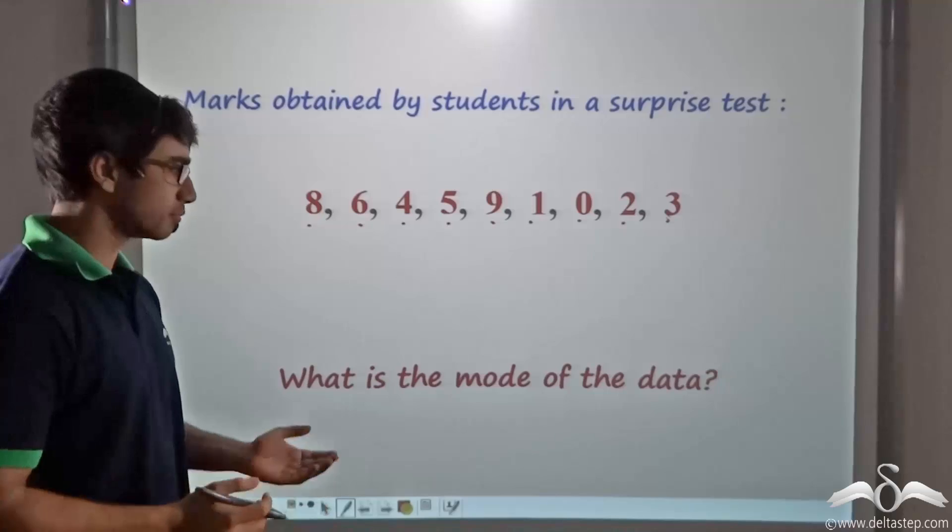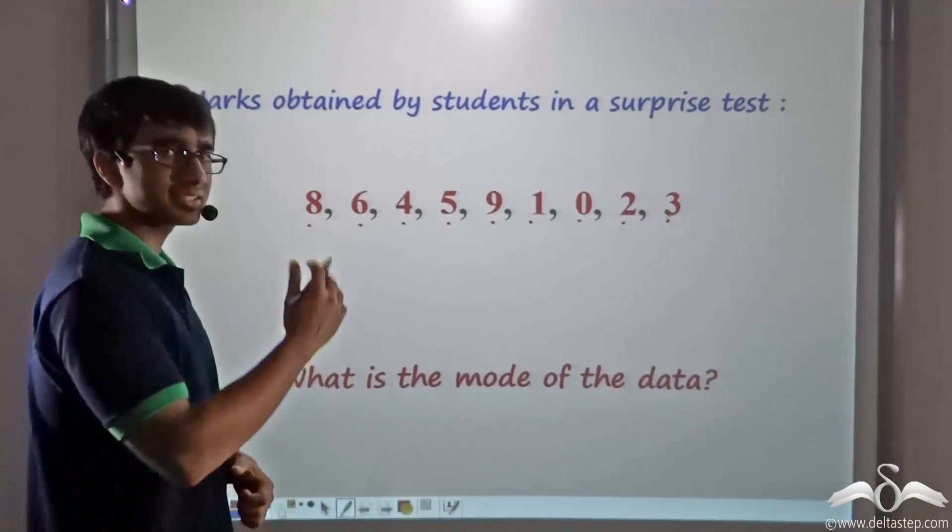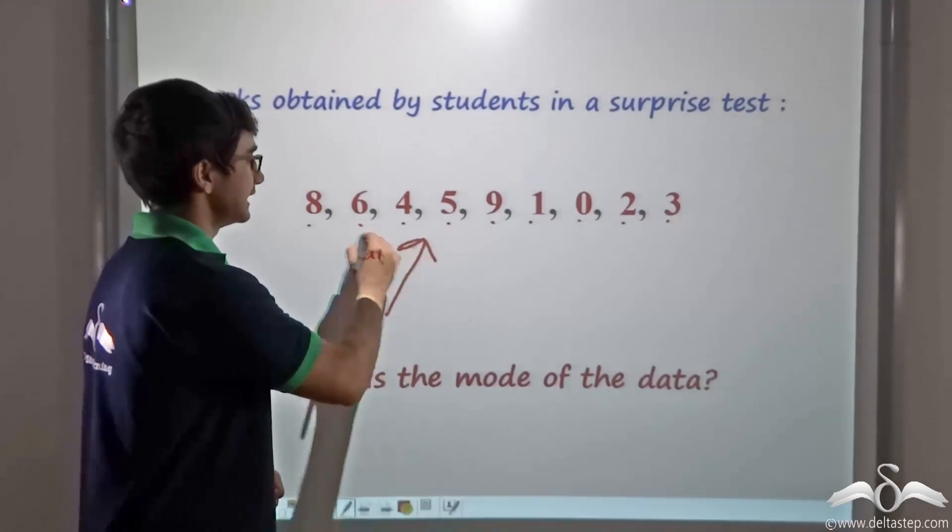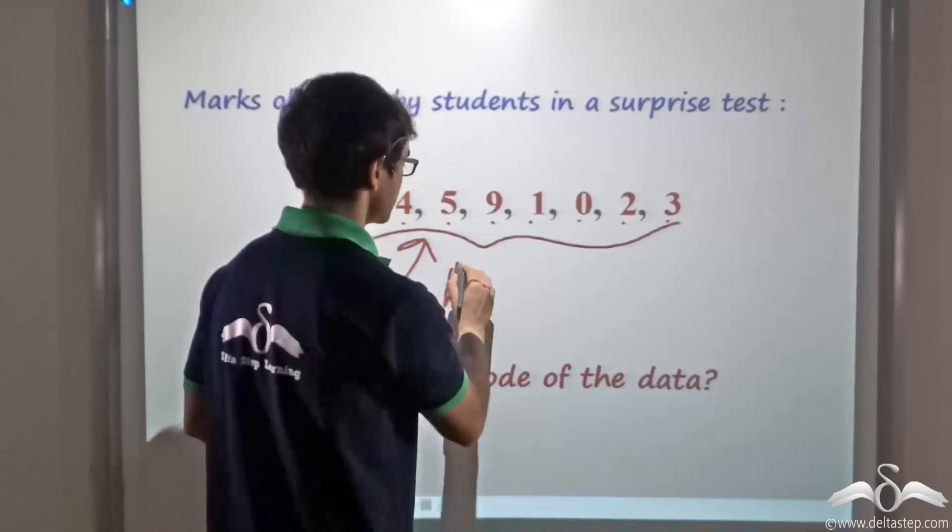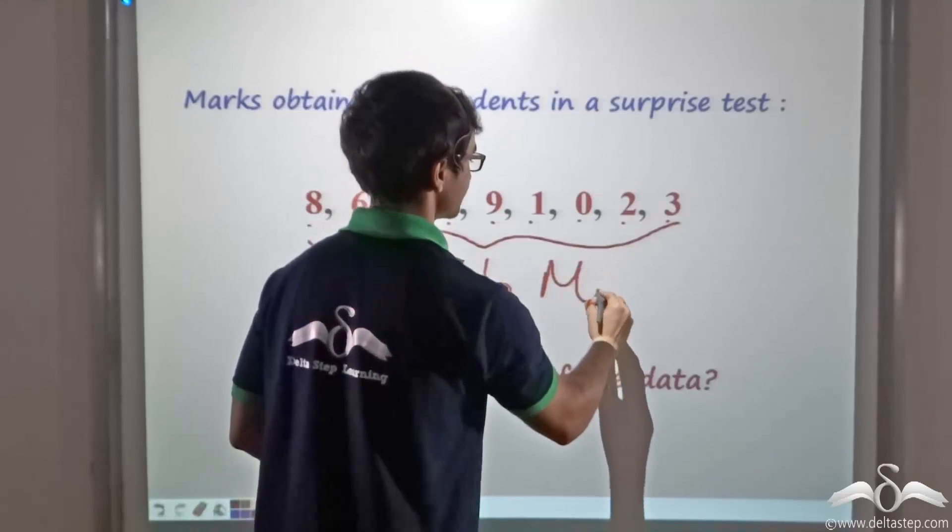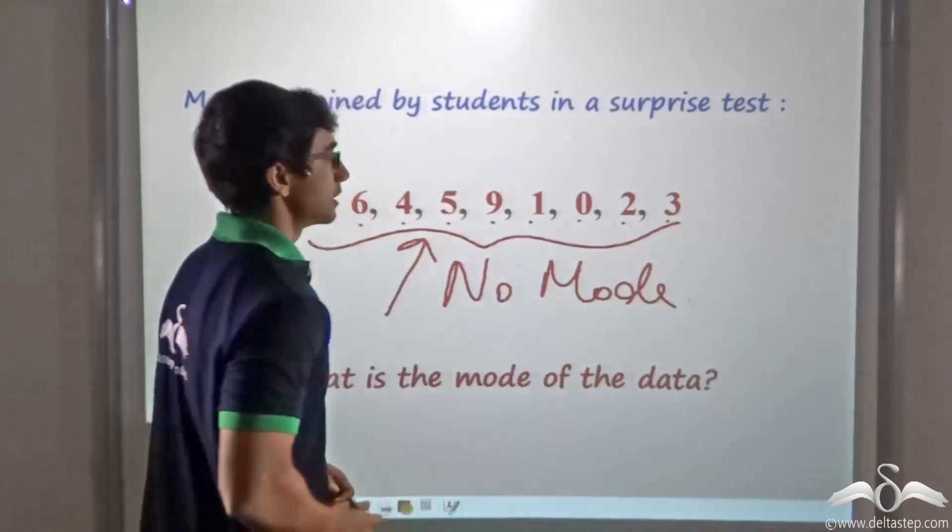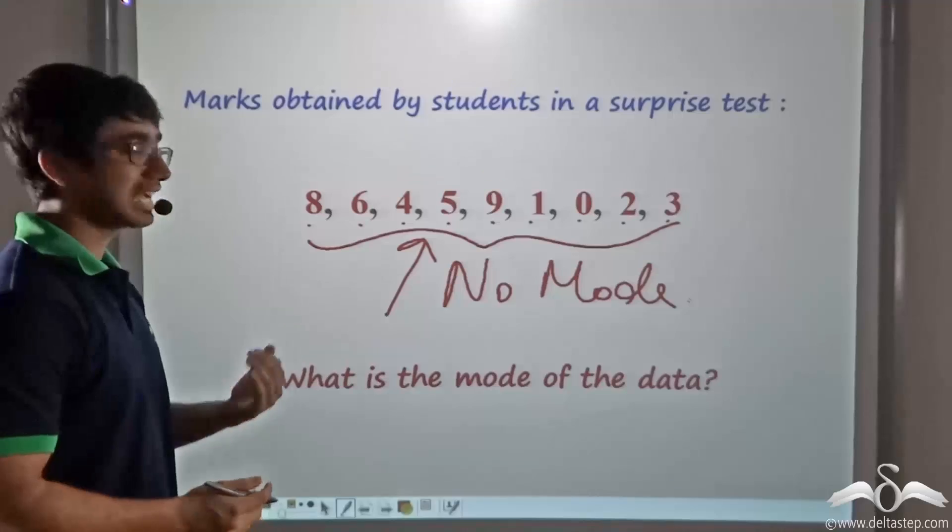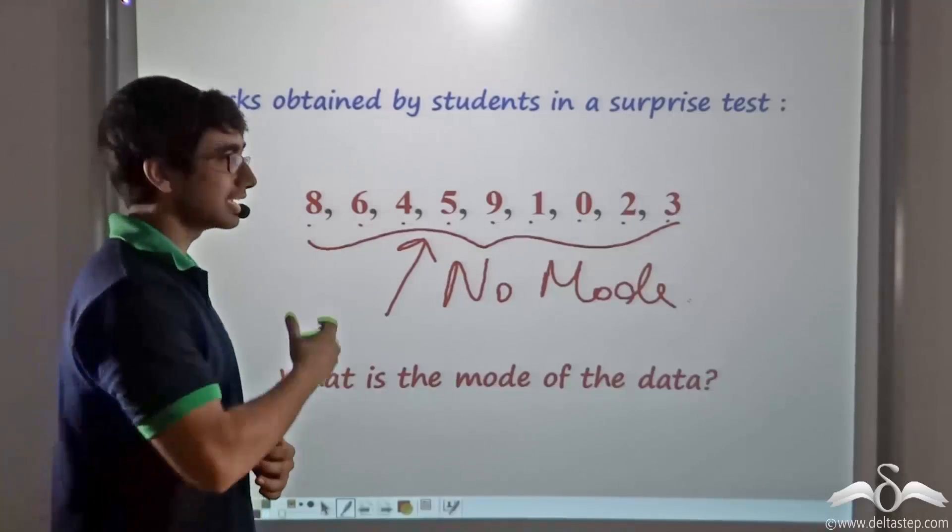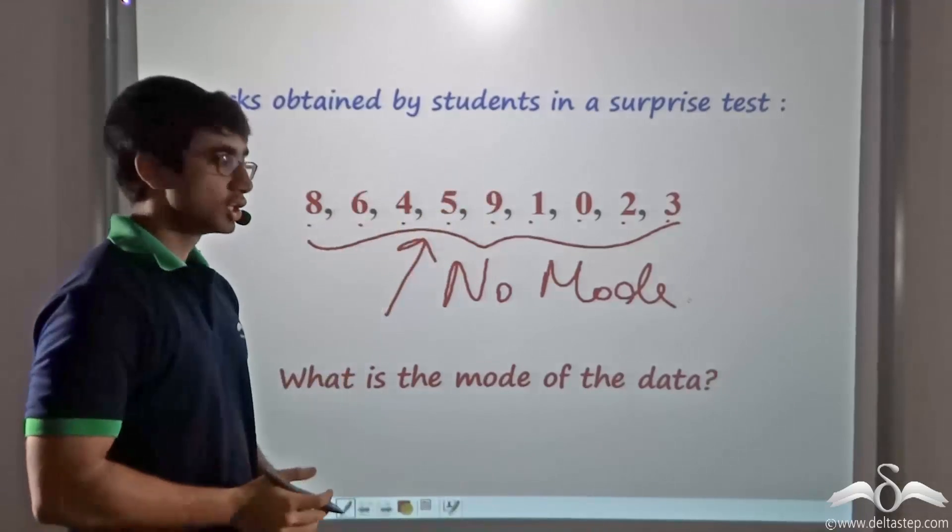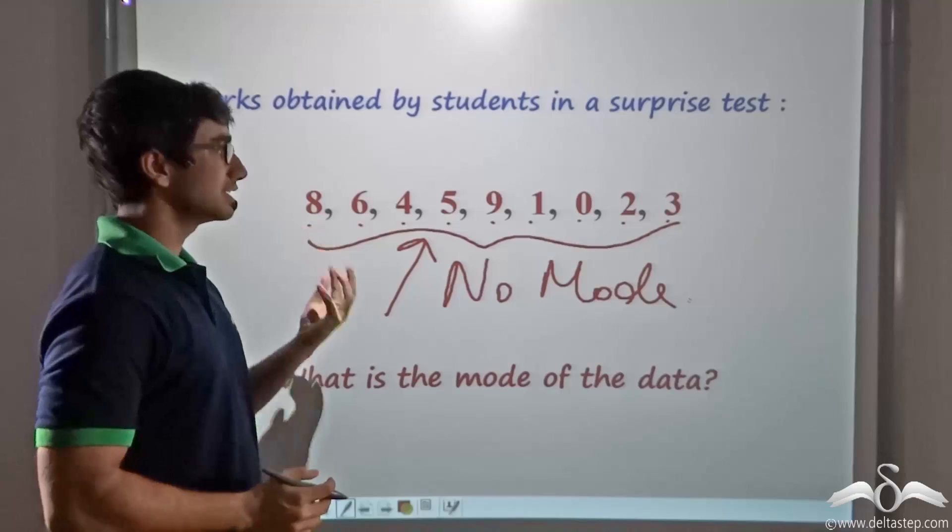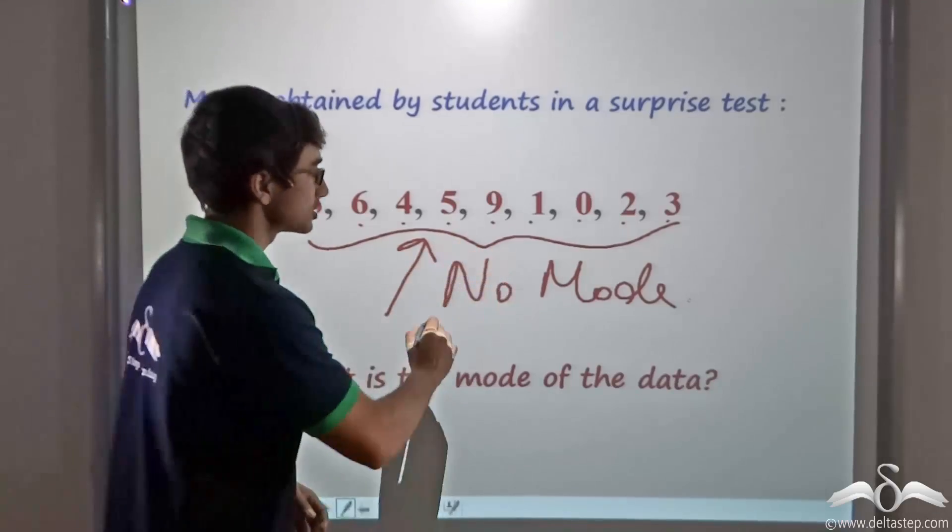So what can we say is the mode of the data? In this case, this particular data set has no mode because all values are occurring once. This set of observations has no mode.